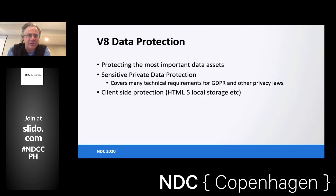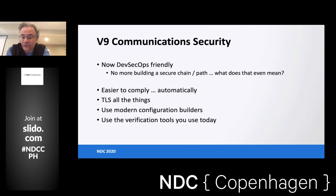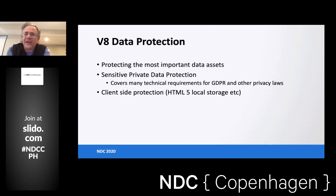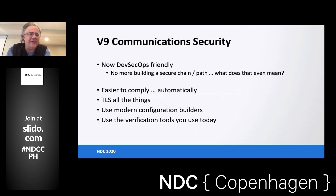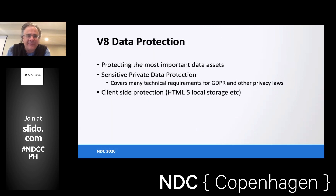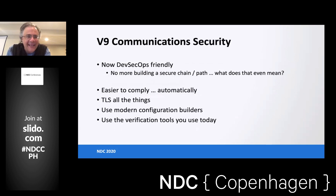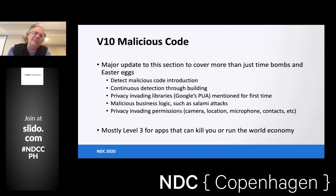V8 is data protection — encryption in transit, sensitive data protection around GDPR and California laws, and how to properly store data client-side and the risks involved. For example, local storage: if I can inject JavaScript into your website via cross-site scripting, I can steal all the data from local storage. V9 is communication security, most importantly proper HTTPS everywhere, configured properly.